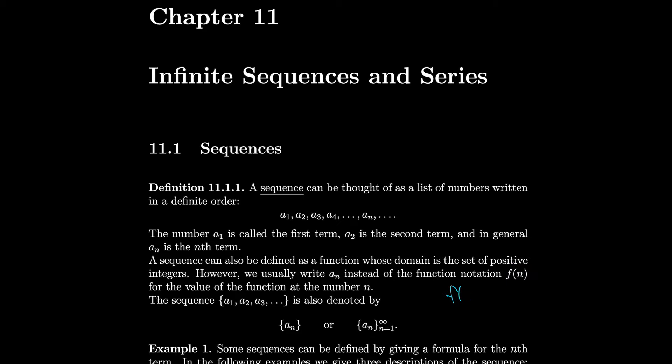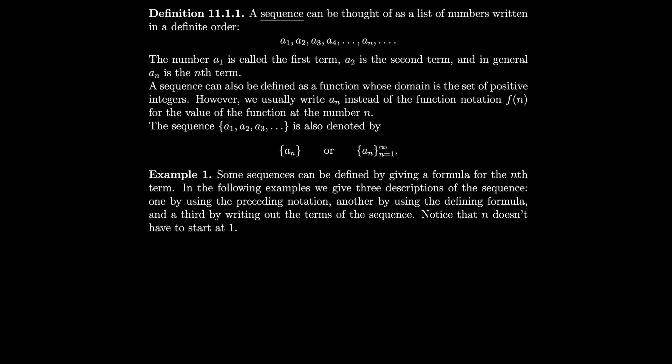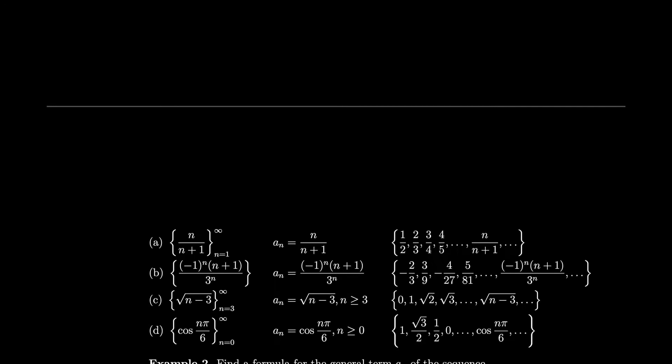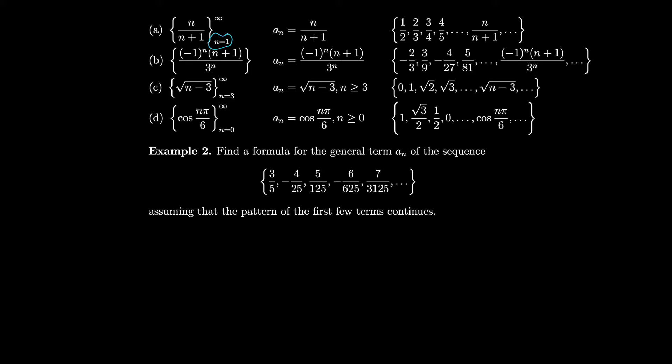So the sequence a1, a2, a3 is also denoted using curly brace notation, or we use the notation to show that it starts at 1 and keeps going forever. Some sequences can be defined by giving a formula for the nth term. n doesn't have to start at 1 in general. In this case we do start at 1, keeping going forever, with each term represented by n over n+1.